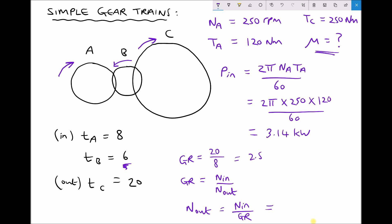Now our input speed is 250 rpm and our gear ratio is 2.5, giving us an output speed of 100 rpm.